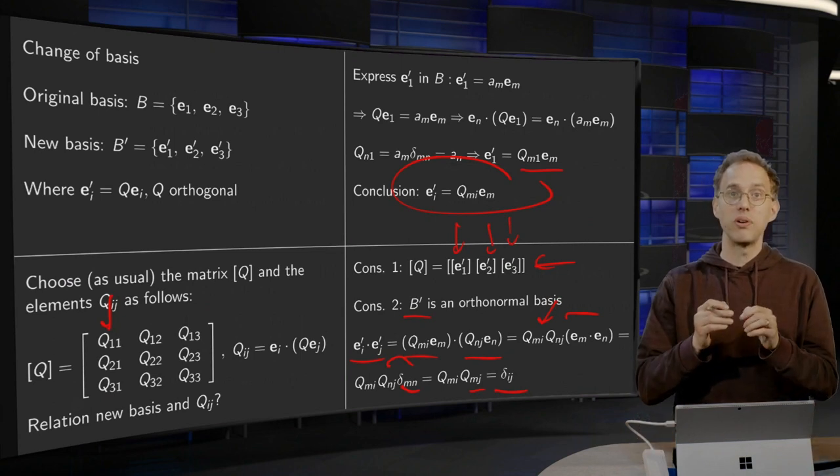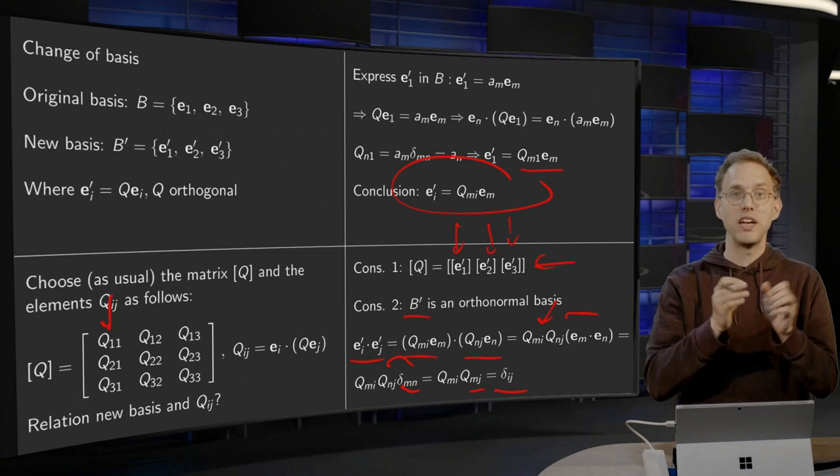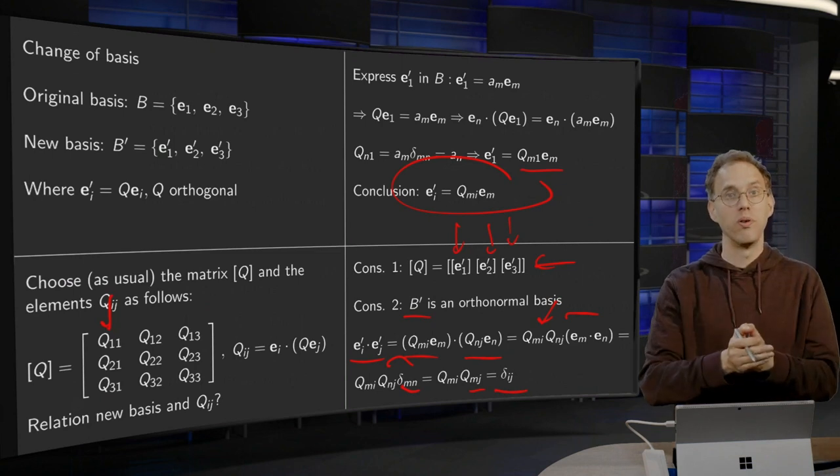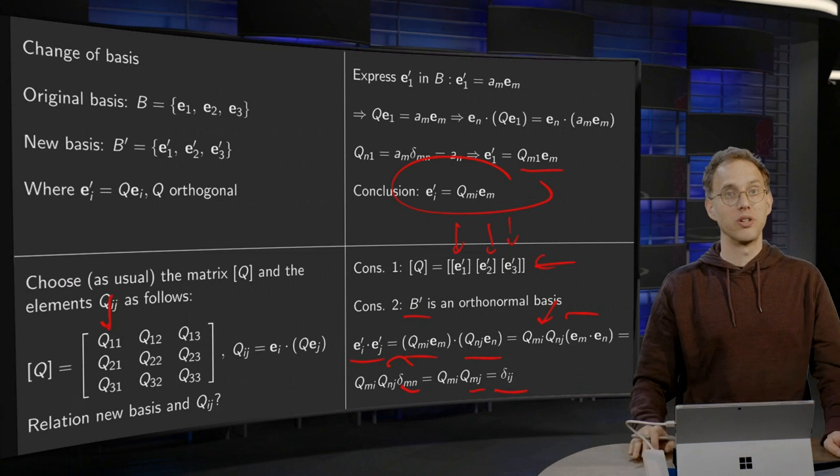So we again have an orthonormal basis. So this is how you can find a new basis, which is orthonormal, using an orthogonal tensor Q.